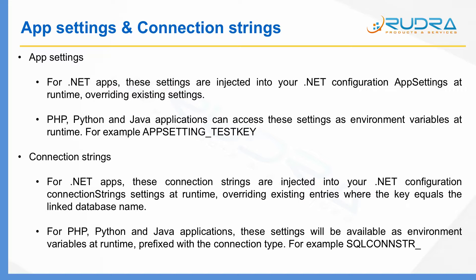In terms of PHP, Python, and Java applications, they can access these settings as environment variables at runtime. For example, if your key is test key, then you need to access the variable using APPSETTINGS_testkey. A similar principle goes to connection strings also — just like the way you mention connection strings in web.config file, you will be able to do the same in Azure portal in the connection strings configuration area.